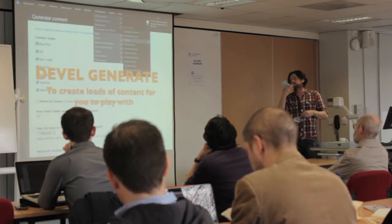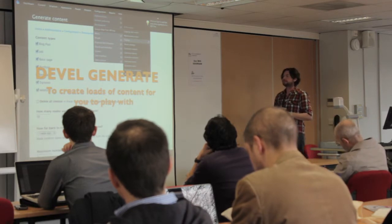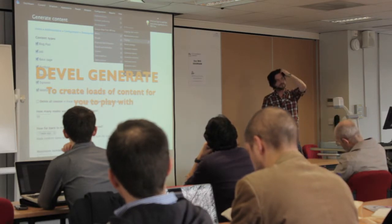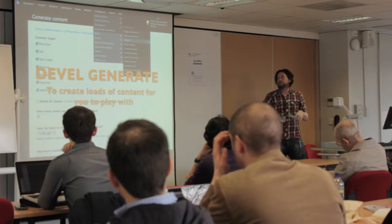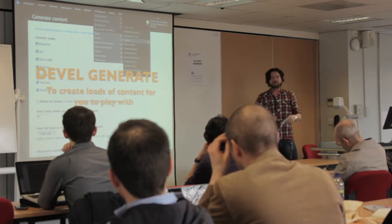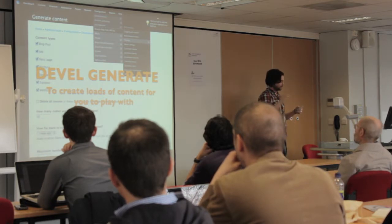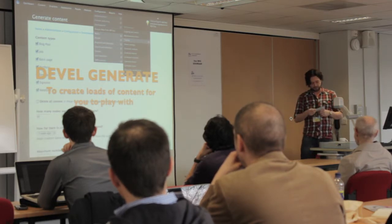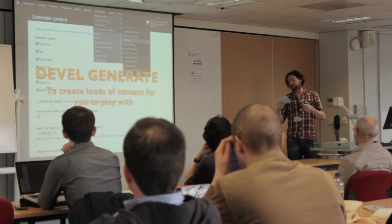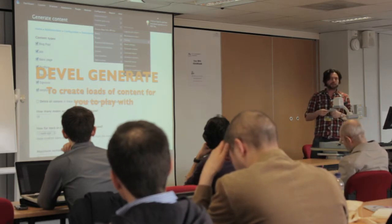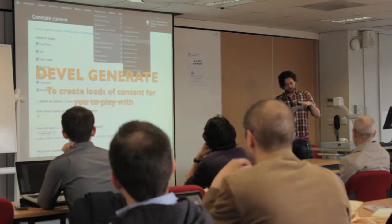There are other modules that help for rapid prototyping. The main one is Devel Generate, part of the Devel module. With it you can just generate a bunch of content straight away - once you've created your content types, you can generate a hundred nodes and have your area full of content, ready for you to start building views or doing experiments. It doesn't just do content either; it will create menus, users, vocabularies and terms, so you can populate an entire site really, really quickly.